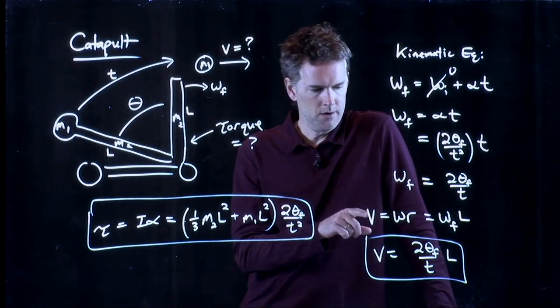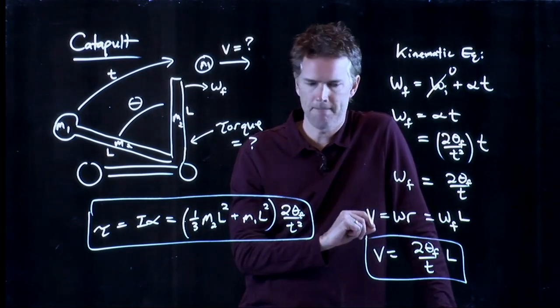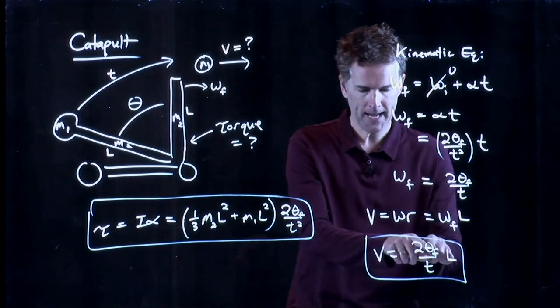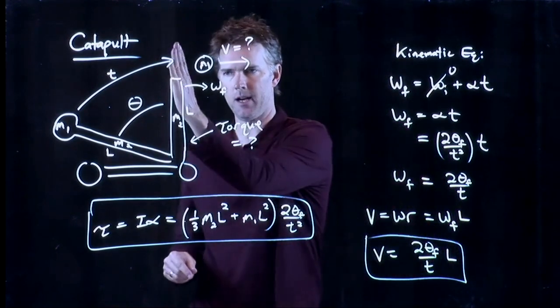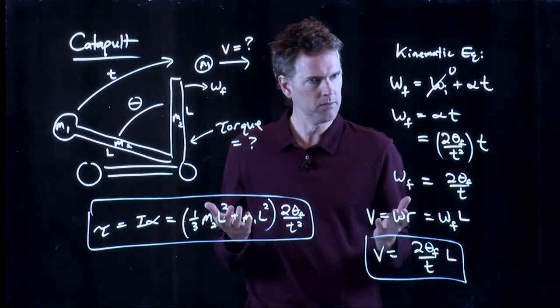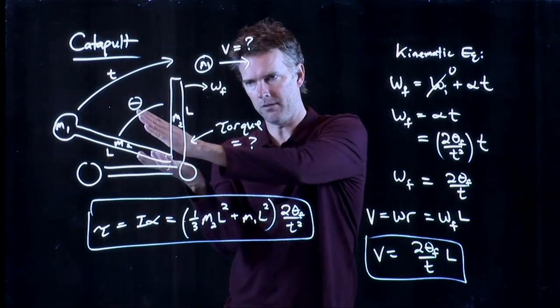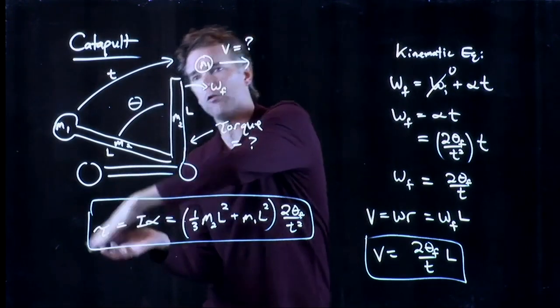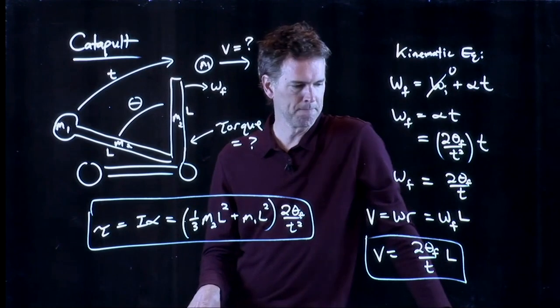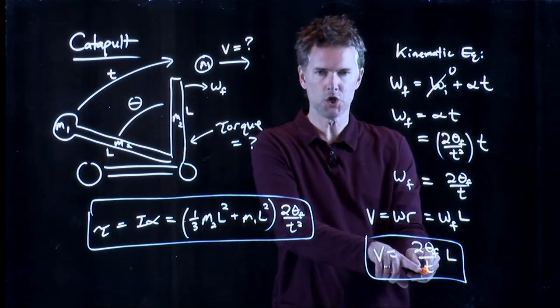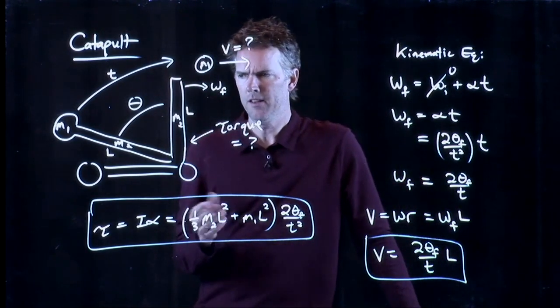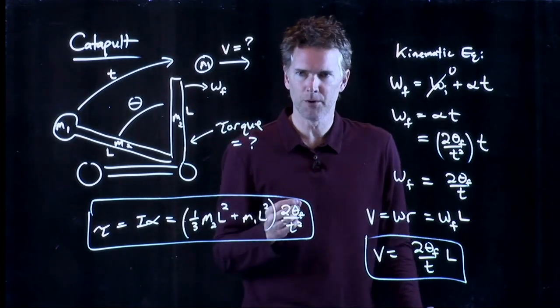Let's make sure that this makes sense. What it says is if I rotate my catapult through a bigger angle theta it's going to be going faster at the end. That makes sense. If my catapult just went like this it would launch it with some pretty slow speed. If it goes up pretty fast to this high altitude it's going to launch it with some bigger speed. That makes sense. It also says that if I do that in a shorter amount of time it's also going to be launched faster.